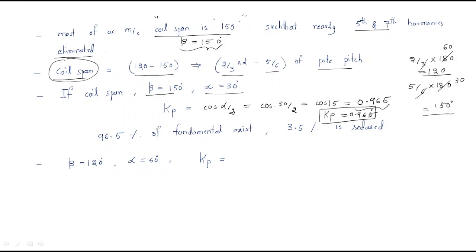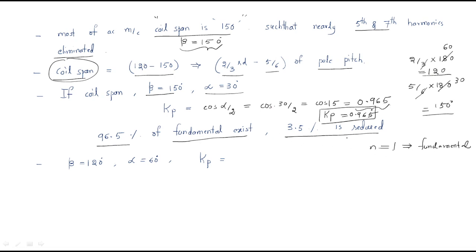The meaning of kp = 0.965 is that 96.5 percent of the fundamental exists in the output. The output voltage generated is 96.5 percent fundamental — that is, n=1, the first harmonic is available. The remaining 3.5 percent is reduced, meaning harmonic content is reduced by 3.5 percent.